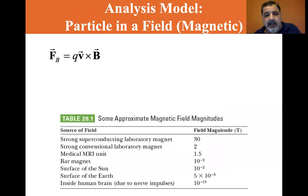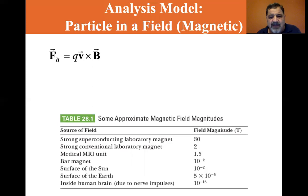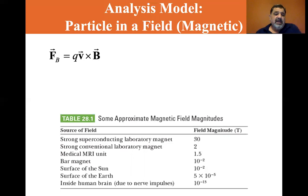The magnetic force on a positive particle is in the direction you push with your palm. Some approximate magnetic field magnitudes: a strong superconducting laboratory magnet is 30 Tesla; a strong conventional lab magnet is 2 Tesla; a medical MRI unit is 1.5 Tesla; a bar magnet is 10⁻² Tesla; the surface of the Earth is 5×10⁻⁵ Tesla; and inside the human brain due to nerve impulses is 10⁻¹³ Tesla.